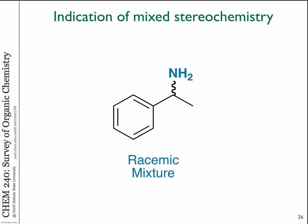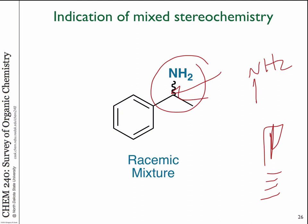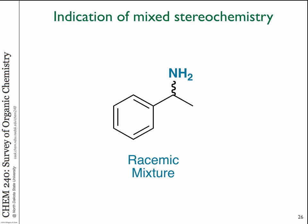A note on notation: a single line says nothing about stereochemistry, a bold line means coming out of the board, and a dashed line means going away from the board. A squiggly line indicates a 50-50 mixture at that center — it's one way to show that you have a racemic mixture at a particular stereocenter.